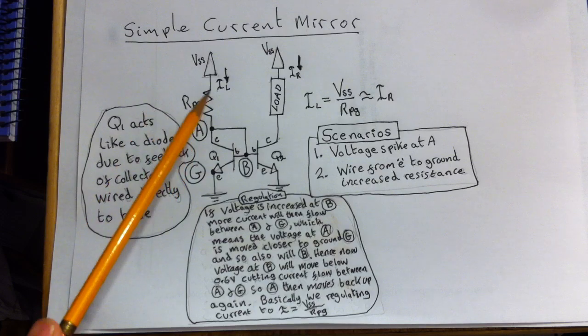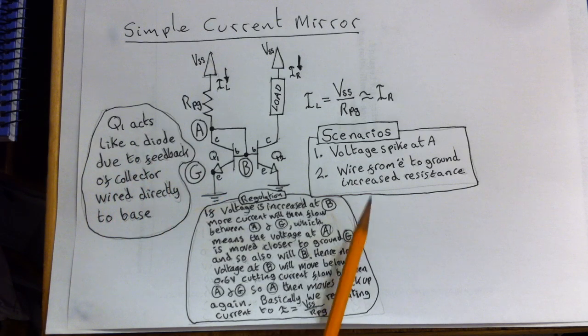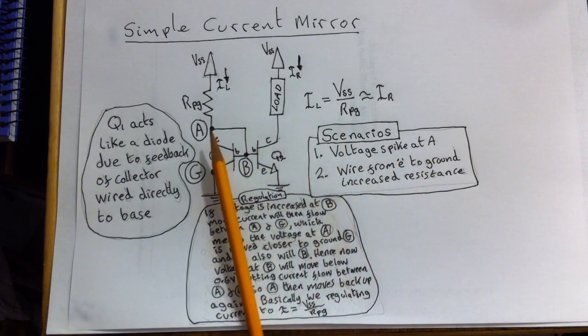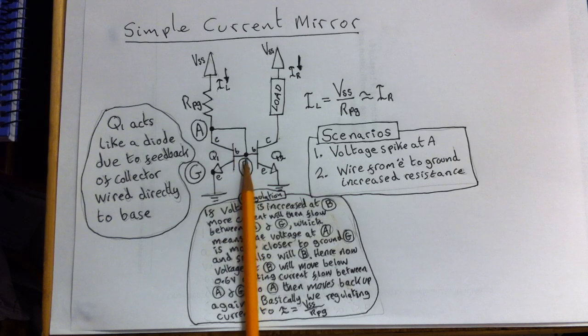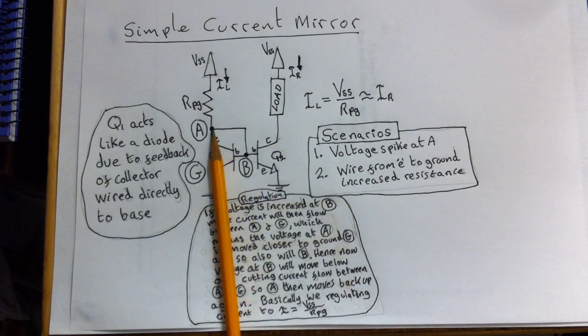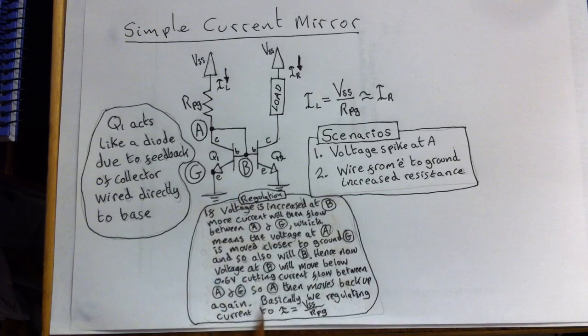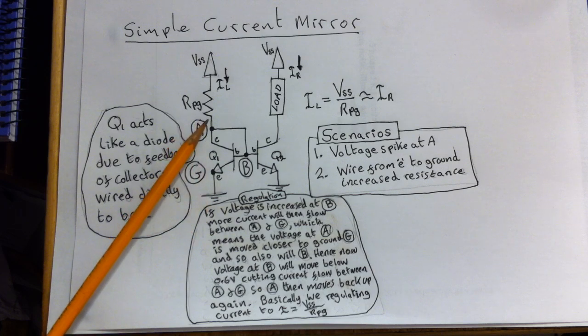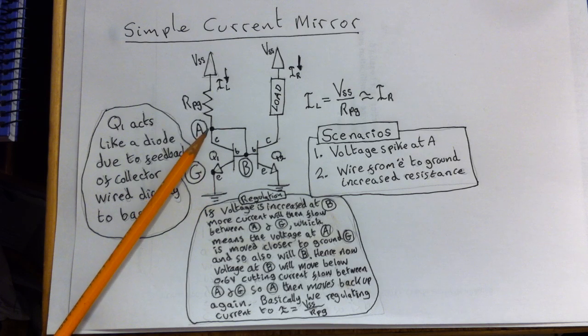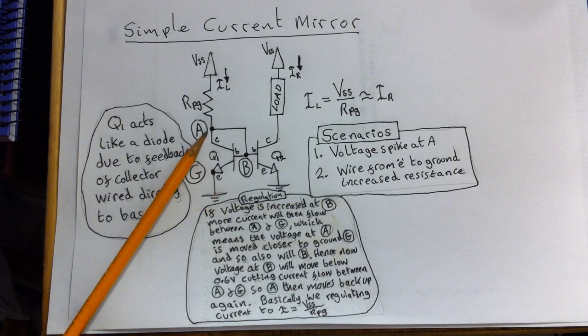So I'll just describe how we're able to emulate this current IL across to IR with a couple of scenarios. First of all, let's imagine that we have a voltage spike appearing at point A. Now, when that happens, the voltage at A is identical to the voltage at B. So if we have a voltage spike at A, the voltage will increase at B. Hence, the PN junction diode will actually be forward biased more so that the current between A and G will increase. Now that we've got a larger current flowing between A and G, then obviously the voltage that is dropped between A and G will be reduced. Hence, what we've done is we've now reduced the voltage at A.